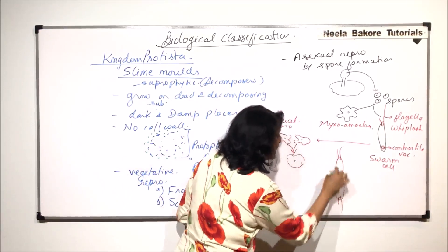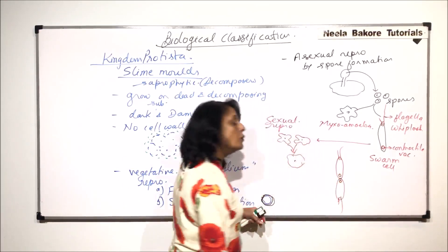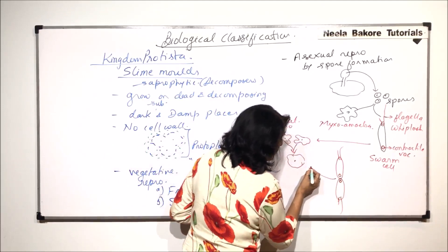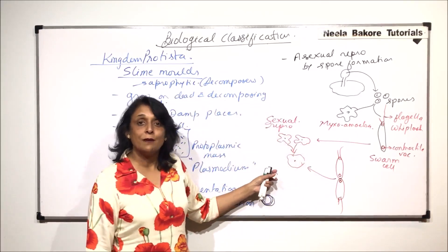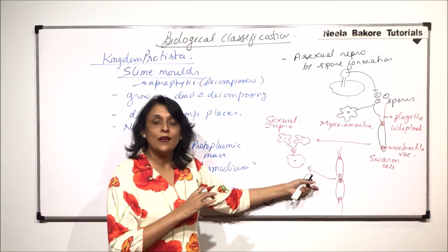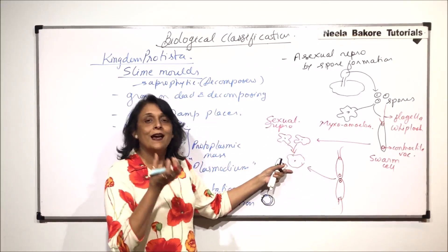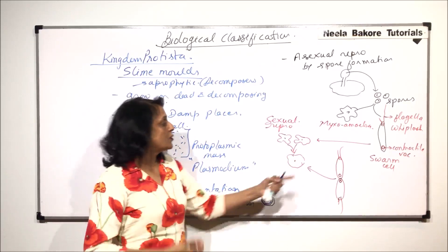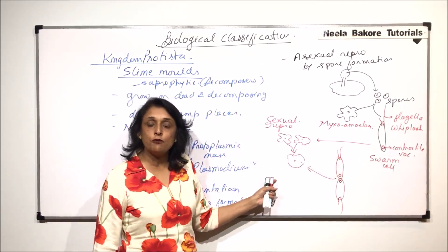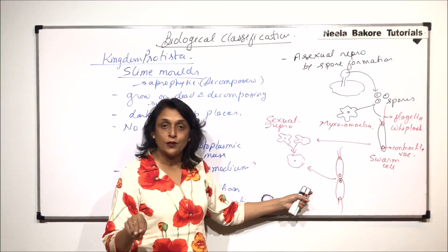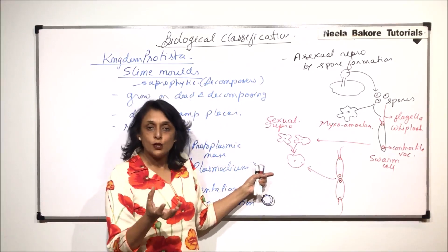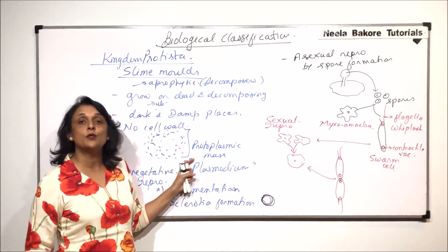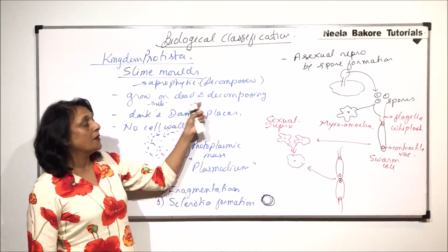Two swarm cells, each with two flagella at their anterior end, fuse at their posterior ends. After fusion they lose their flagella, become irregular in shape, and form an irregular shaped mass. So whether it is mixoamoeba fusing, swarm cells changing into mixoamoeba and fusing, or swarm cells independently fusing, ultimately a diploid cell is formed which fuses with similar cells to form the protoplasmic mass we call plasmodium.